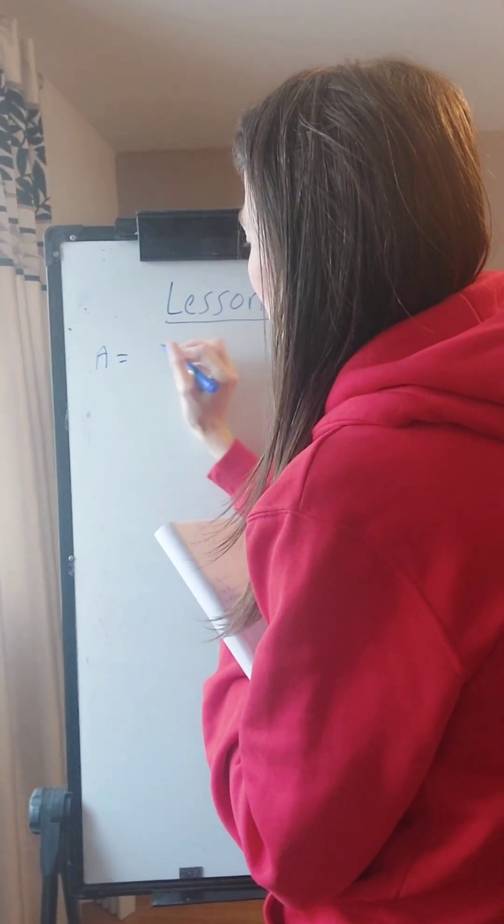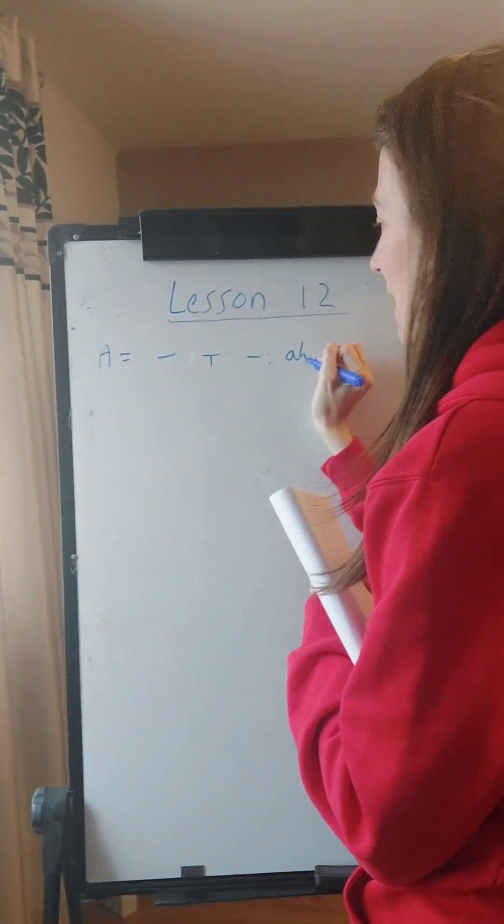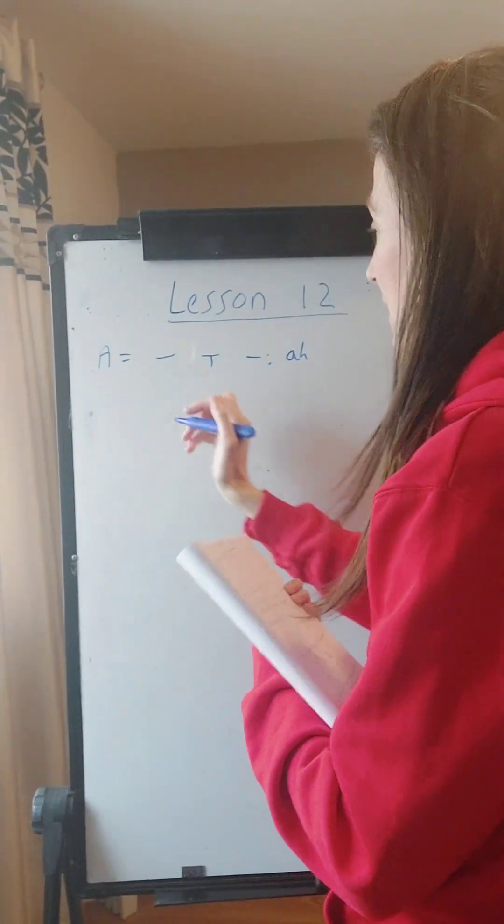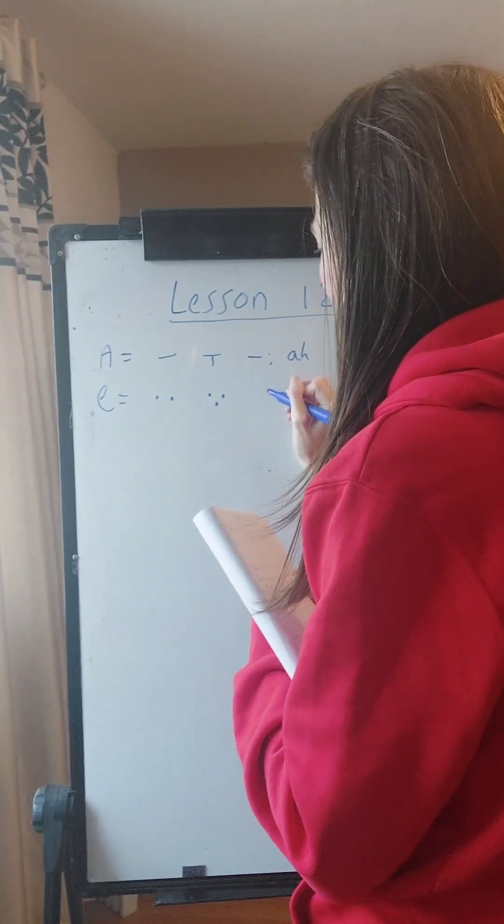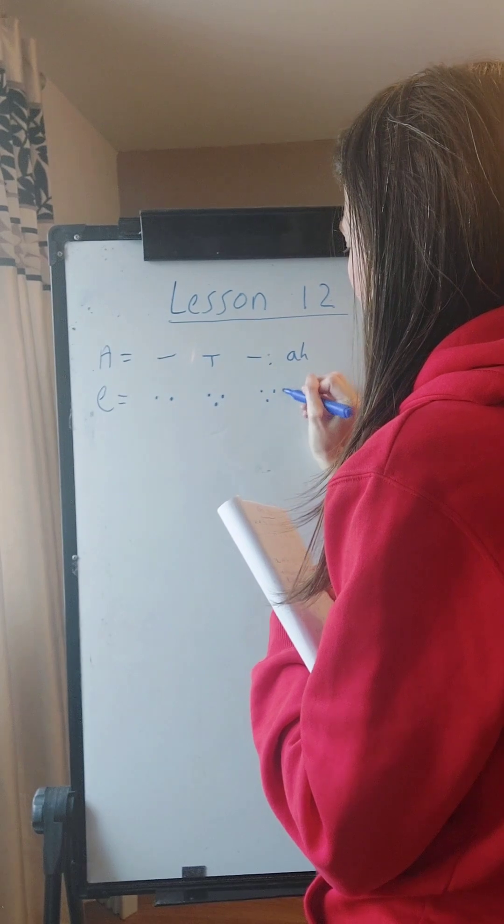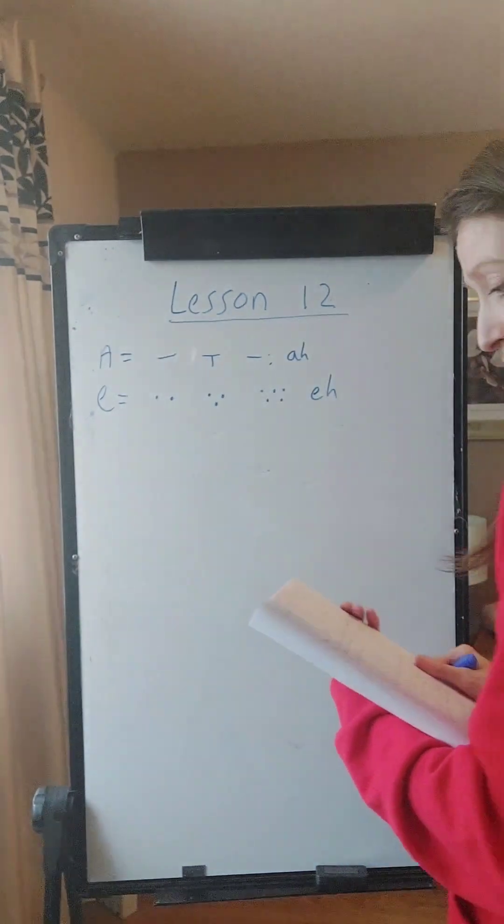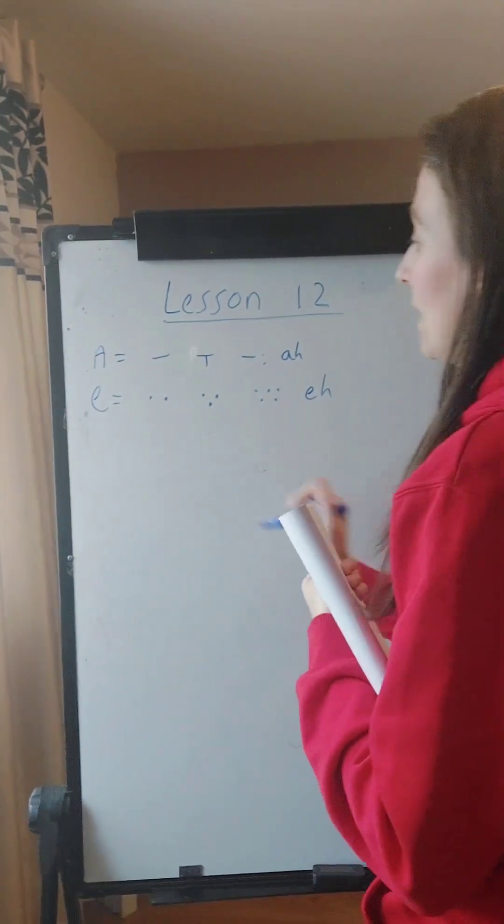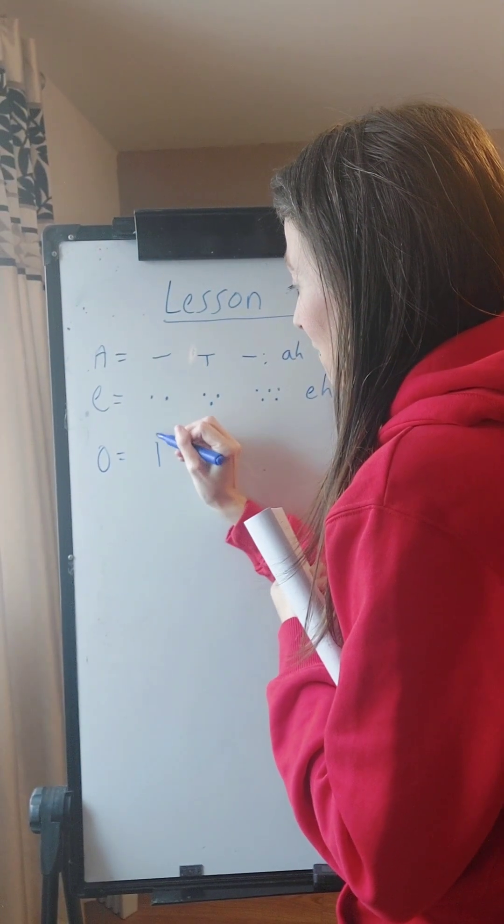So the vowels we know so far: we know the A vowel, we know the E vowel, and on Tuesday we looked at the O vowel, one of the O vowels, which is the Vav with the dot on top.